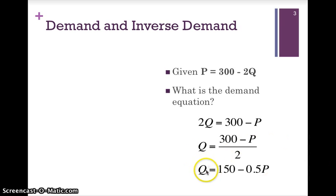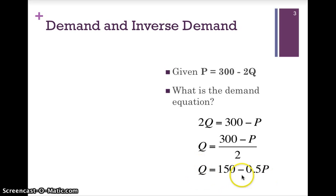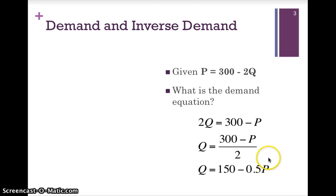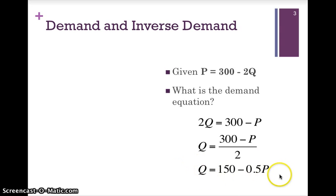Now we have a demand function with Q having a negative relationship with P. We are still seeing that as the price rises it will cause the quantity demanded to fall — the negative relationship still exists.